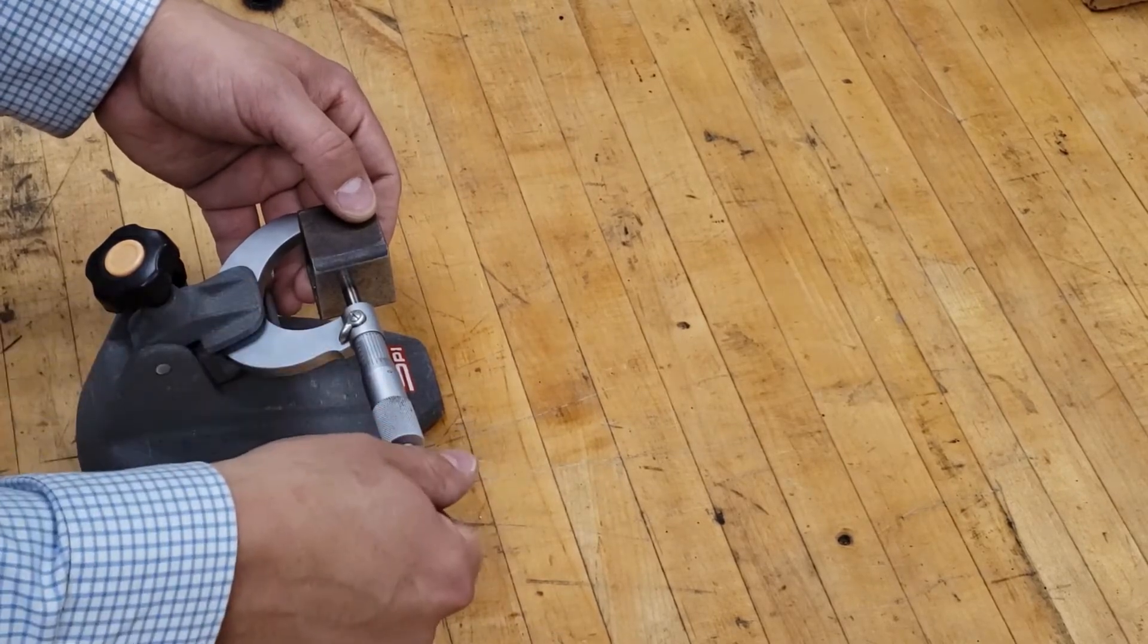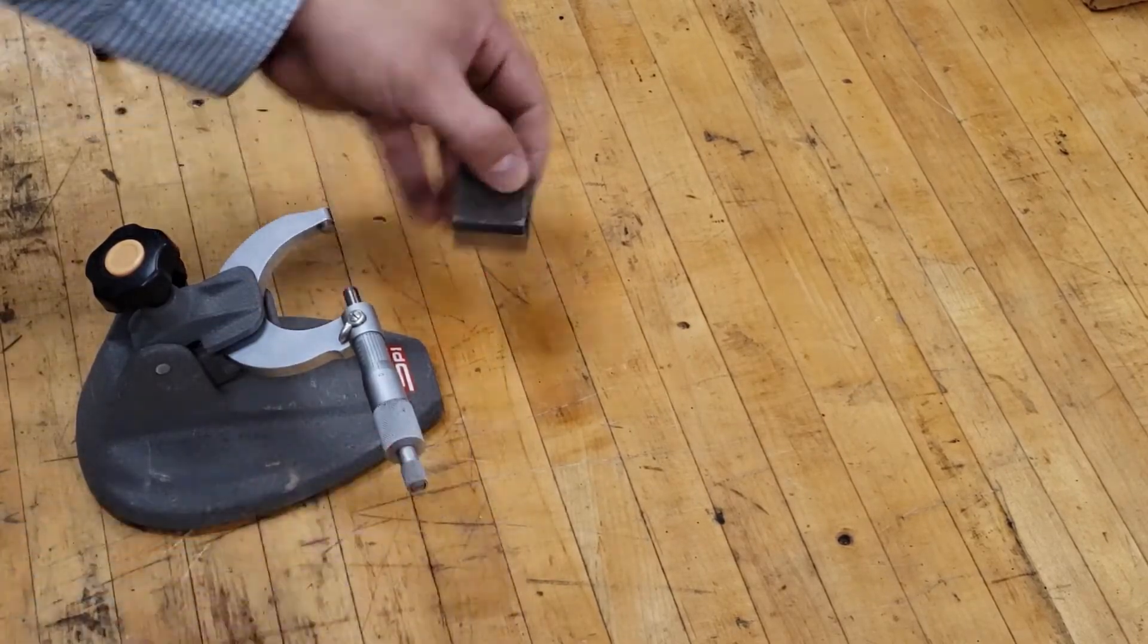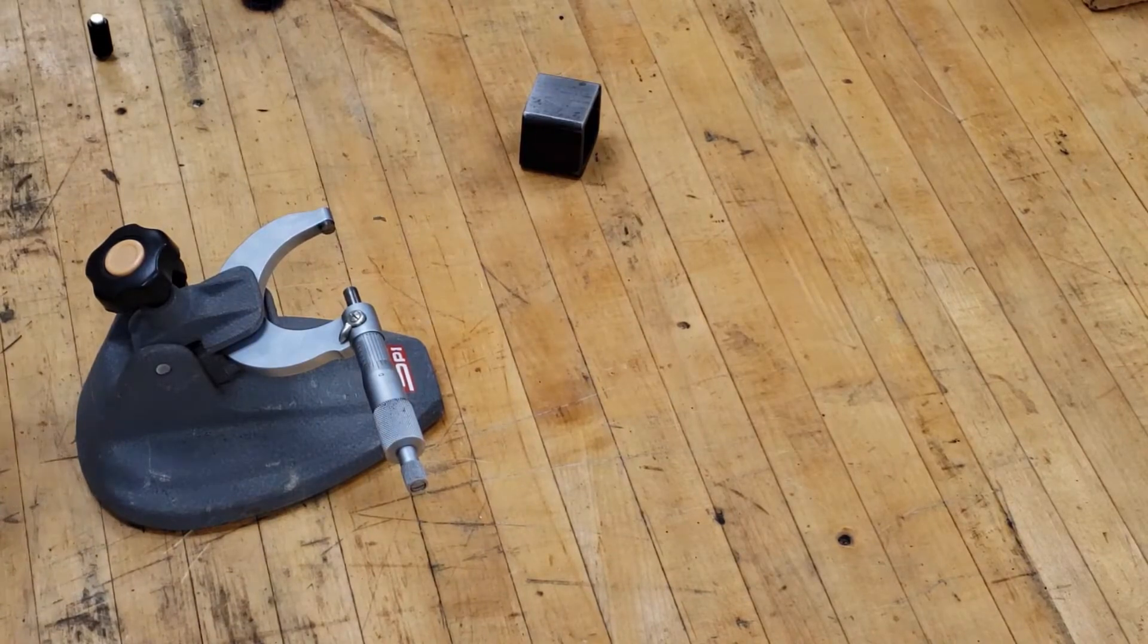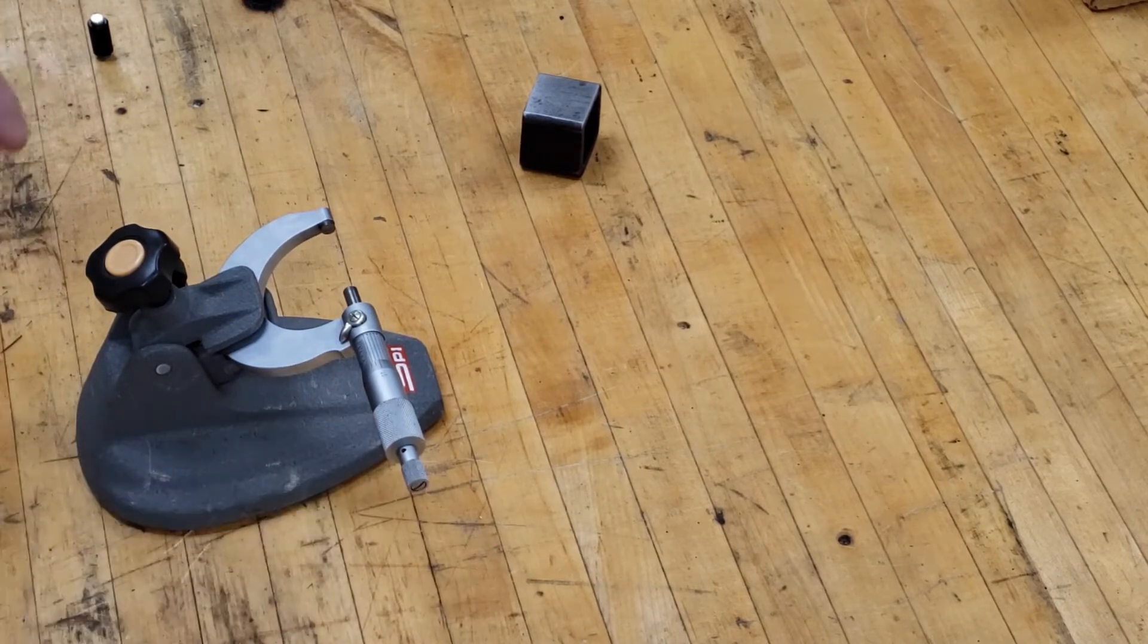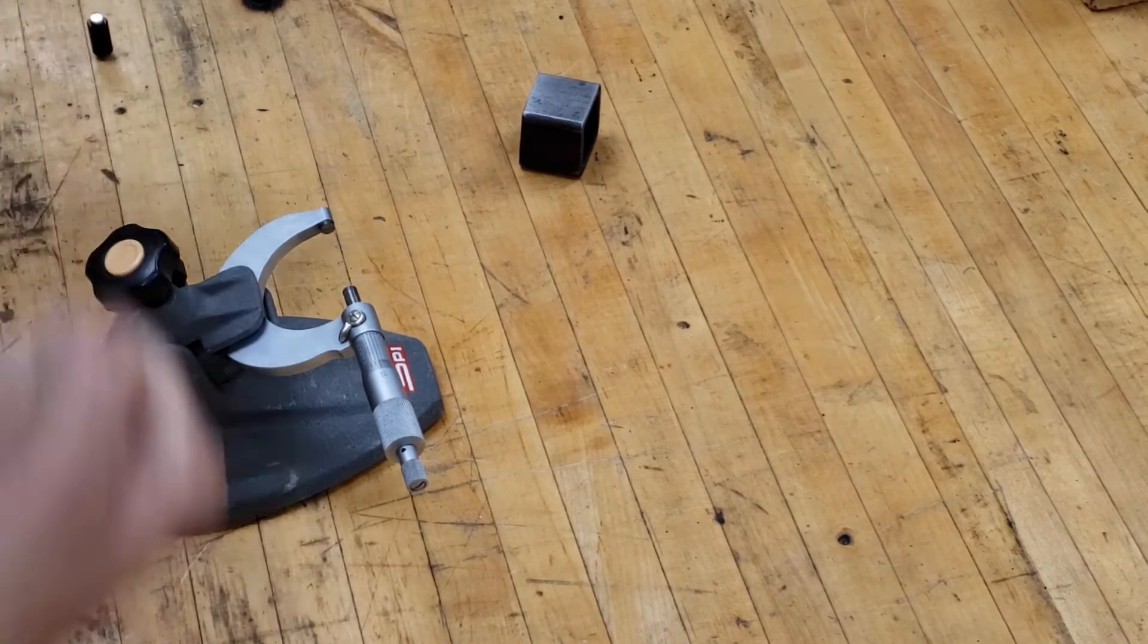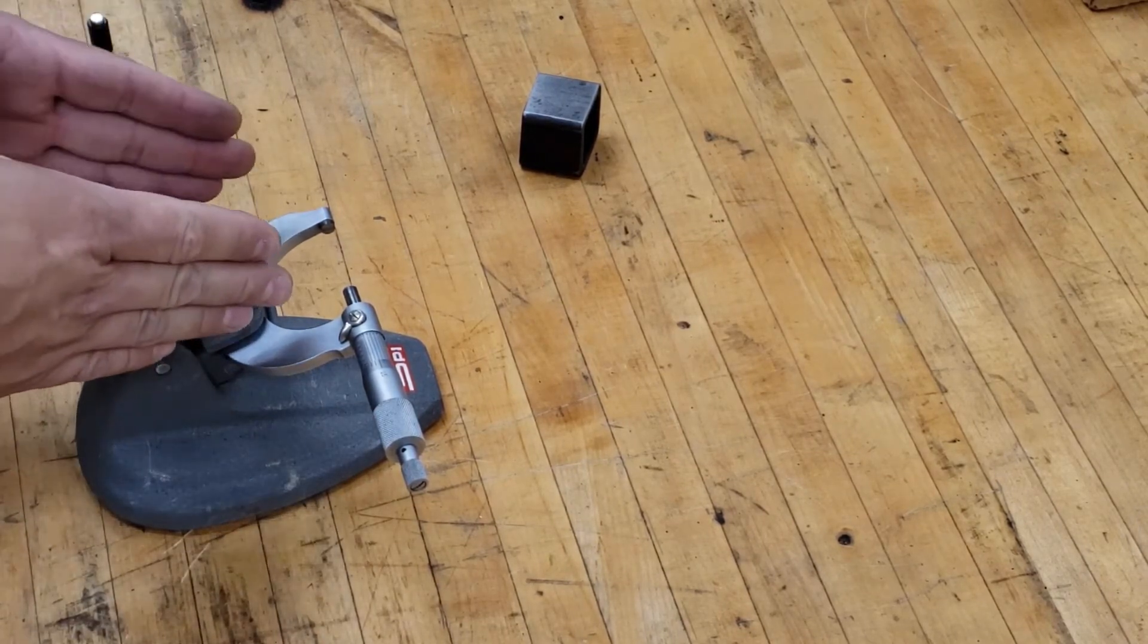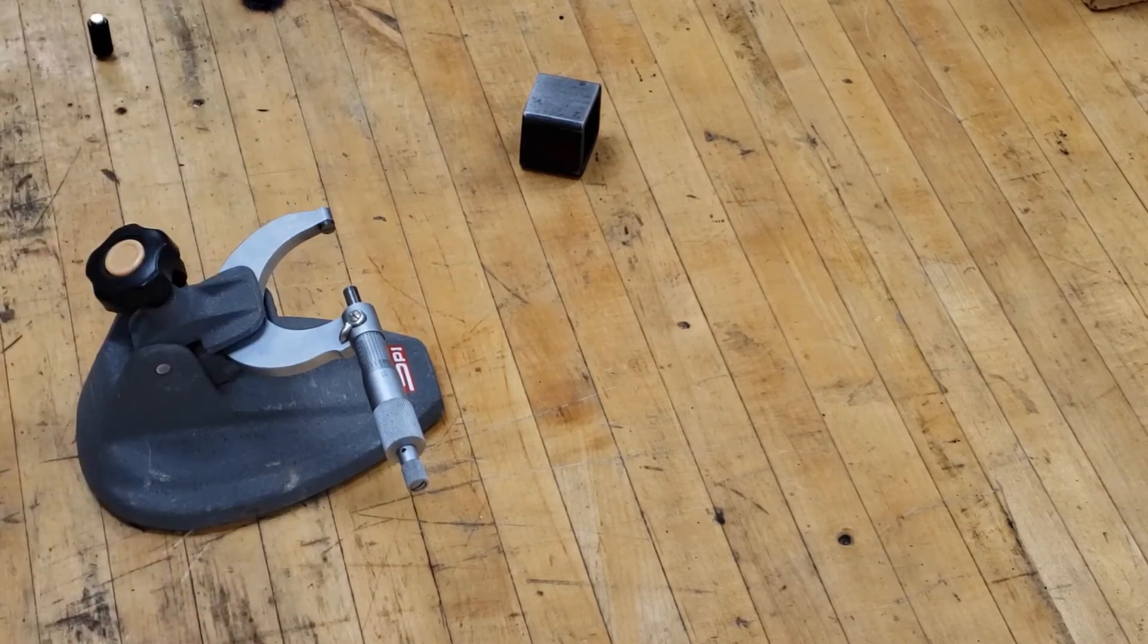Then undo the lock, release the part, and leave it for the next person. Make sure that you do not tighten from this inner spindle. If you do that, you can actually over-tighten it and spring the micrometer where it won't be accurate anymore.